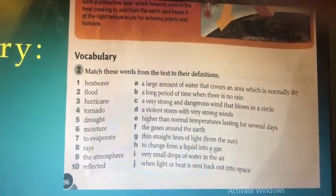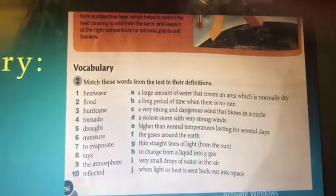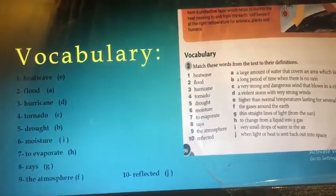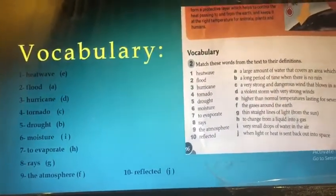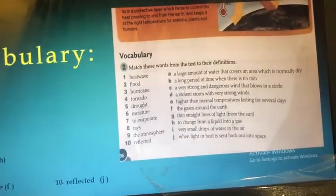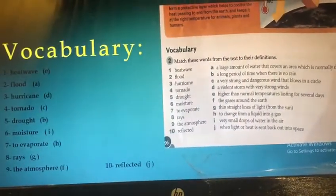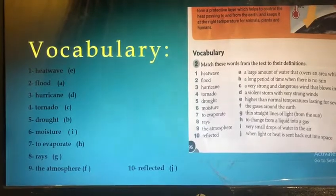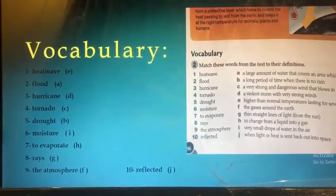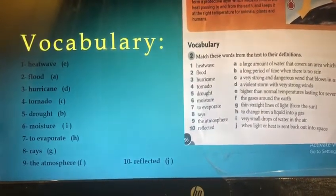Good job, everyone! Here are the answers: heat wave matches sentence E — higher than normal temperatures lasting for several days. Flood goes to A, hurricane goes to D, tornado to C, drought to B, moisture to I, evaporate to H, phrase to G, atmosphere to F, and the last one goes to sentence J.